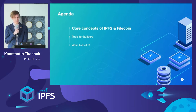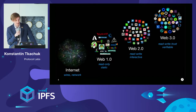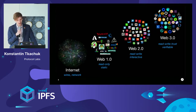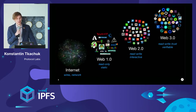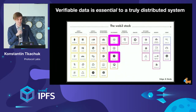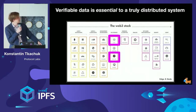Starting with the core concepts of IPFS and Filecoin — we are somewhere between Web2 and Web3. What exactly is Web3? Let's say it's the evolution of the internet, the next step, and it makes the web read, write, and trust. Trust is the operative thing here, and it is achieved through verifiability and a whole bunch of underlying primitives and technology. Verifiable data is essential to a truly distributed system, and data itself is one of the big pieces of the Web3 stack puzzle.